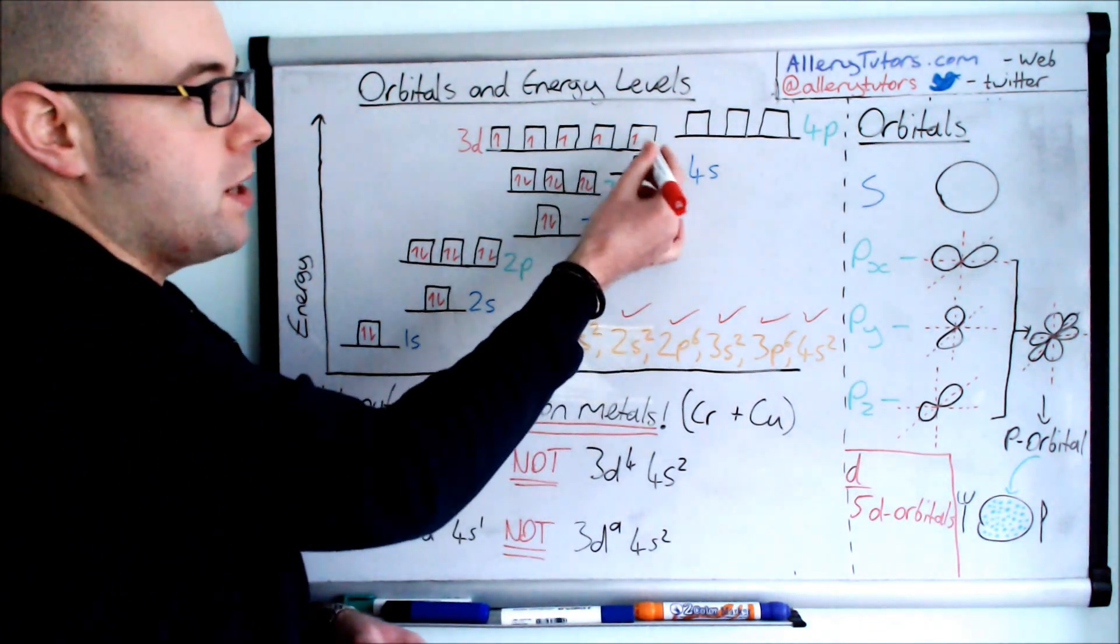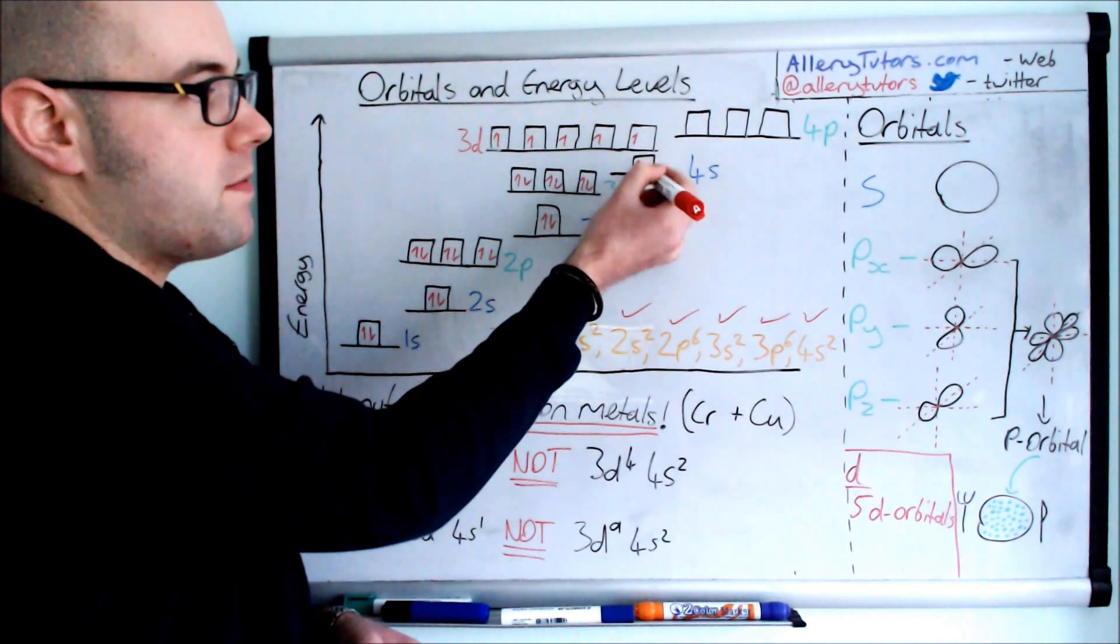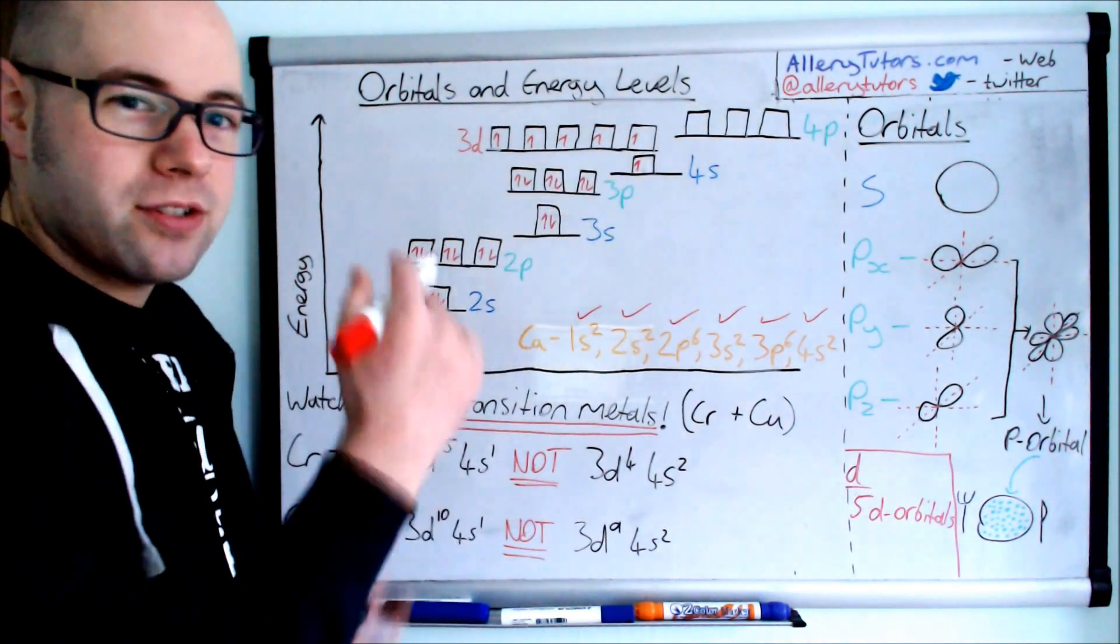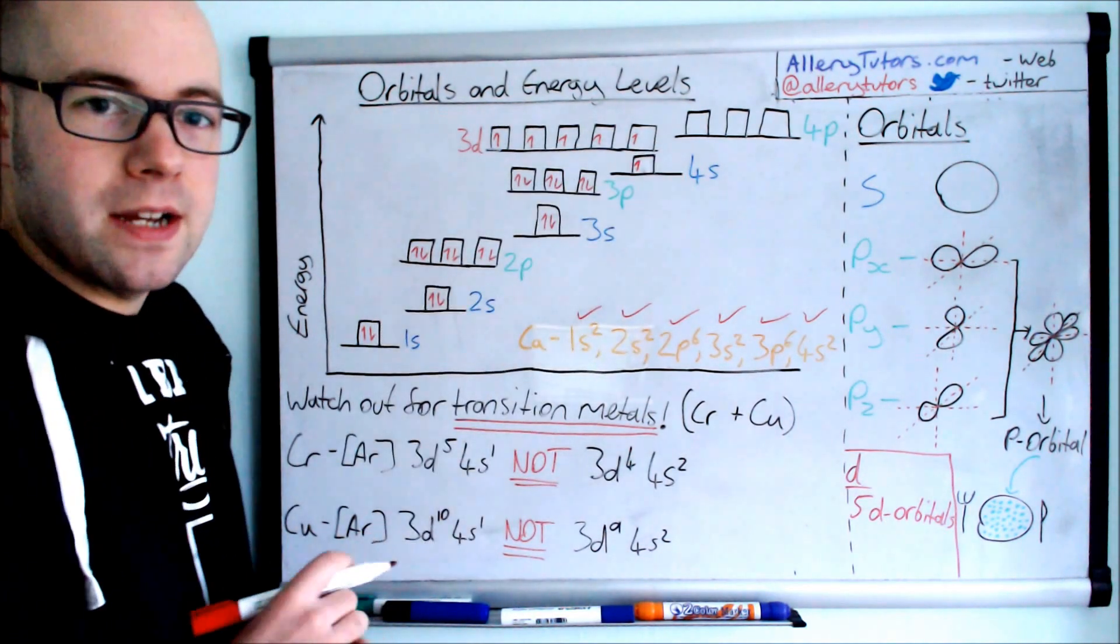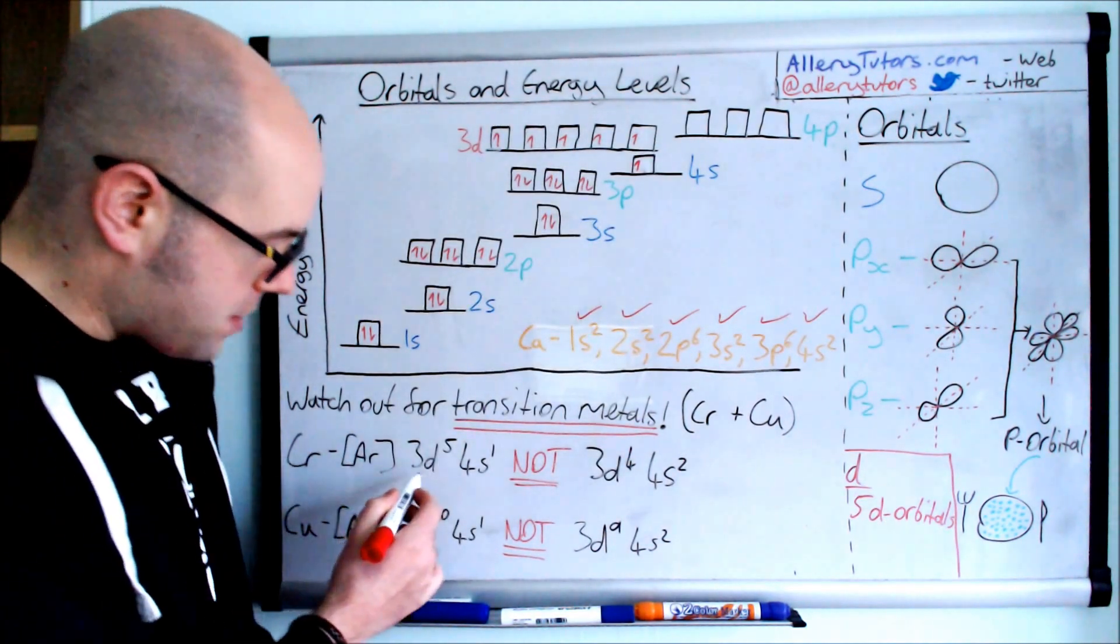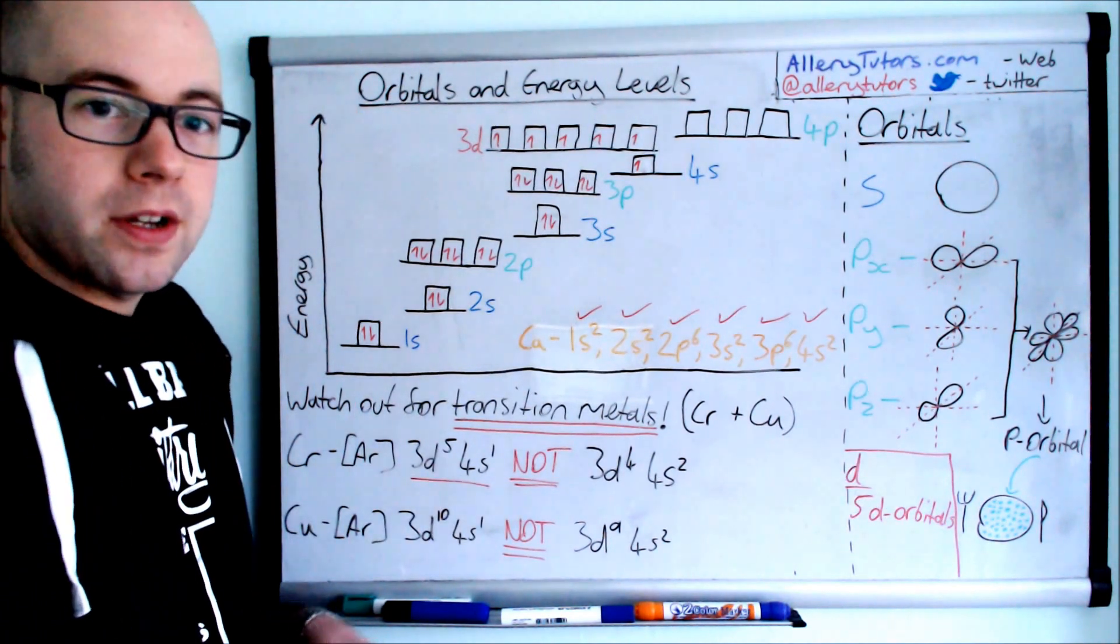But actually, what happens with chromium is one of the electrons in the 4s orbital actually goes in to occupy the unoccupied 3d orbital. This is lower in energy. Having a half-filled 3d orbital is lower in energy than having a paired electron in the 4s orbital. This is because the orbitals, the sub-orbitals, are actually very close to each other in energy. Therefore, the electron can migrate quite readily between the 4s and the 3d orbital. So chromium has a 3d5, 4s1 configuration.